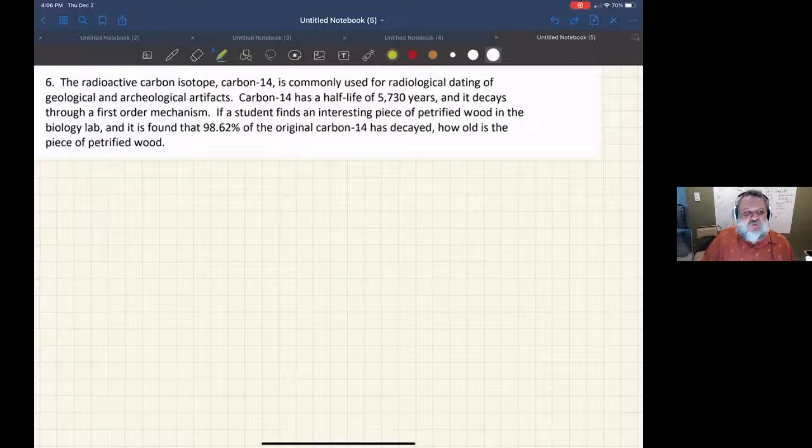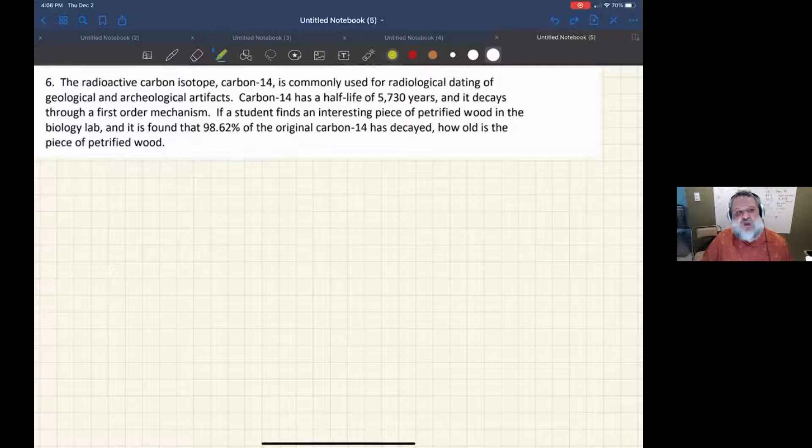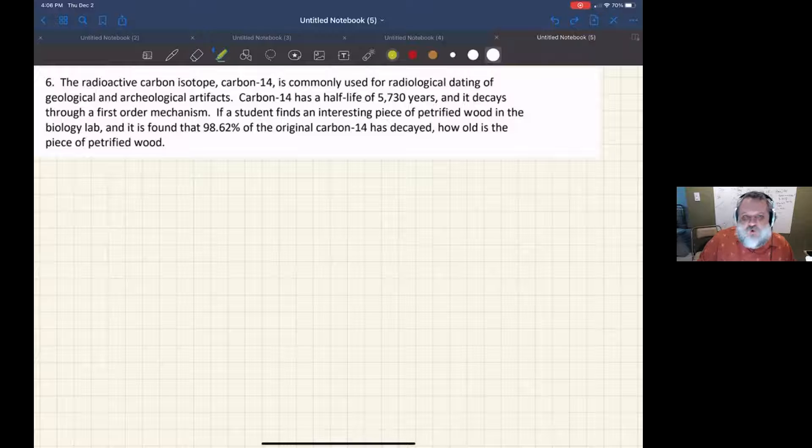Here's problem number six about radioactive carbon isotope carbon-14. We're going to use it for carbon dating. It tells us the half-life, and asks: if we find a piece of petrified wood where the carbon-14 has decayed by 98.62 percent, how old is that piece of petrified wood?